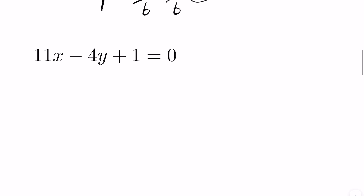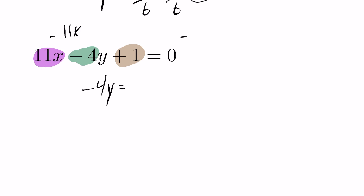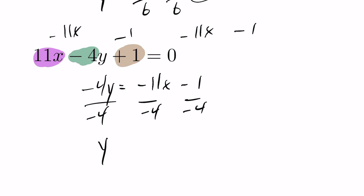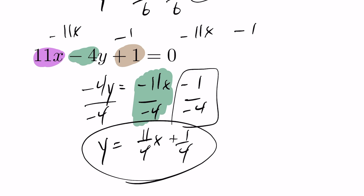In this example, again in standard form, I want y equals mx plus b form. The 11x, the positive 1, and the minus 4 are all in the way. Subtract 11x and subtract 1 on both sides, giving minus 4y equals minus 11x minus 1. Divide across by negative 4 — the two minuses become positive — so this re-expresses as 11 fourths x plus 1 quarter. The slope is 11 over 4 and the y-intercept is 1 over 4.